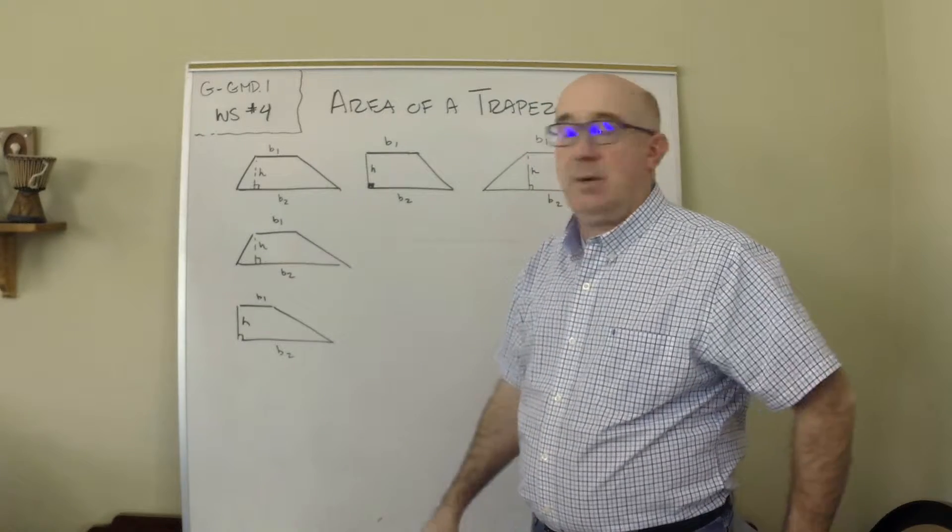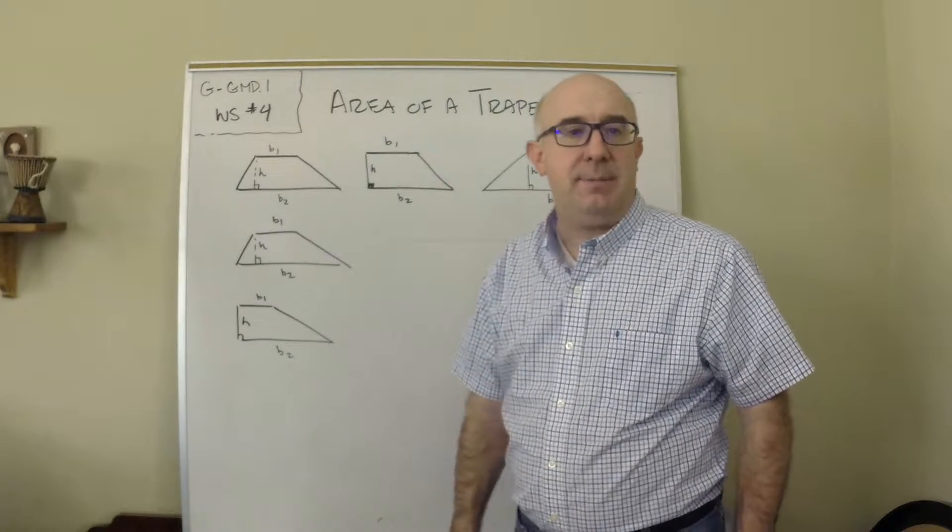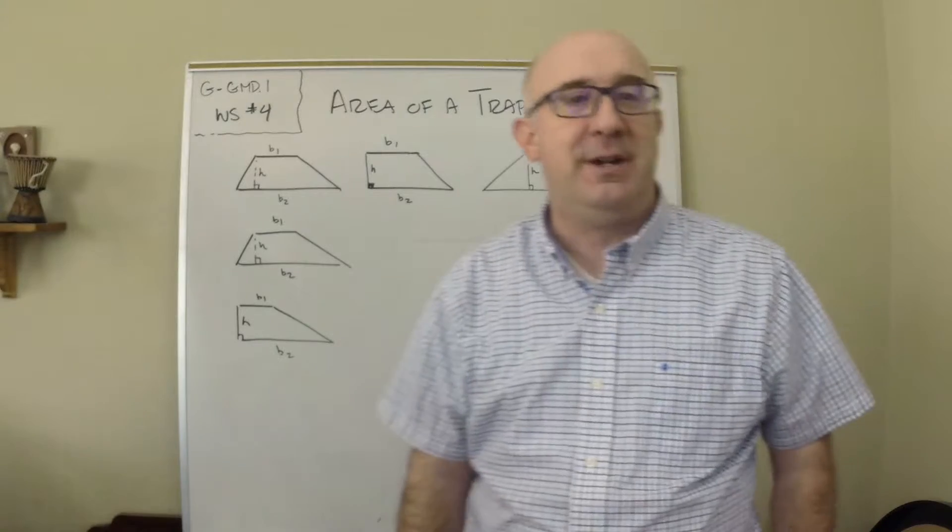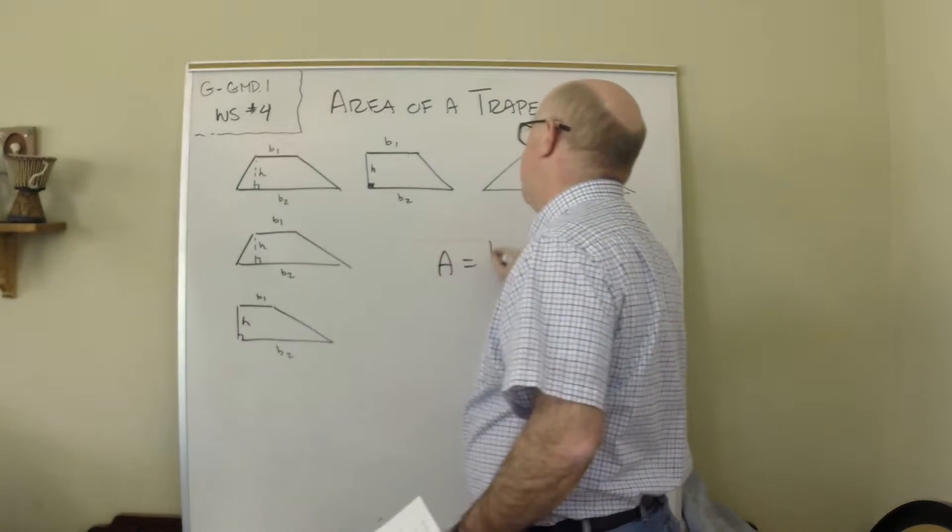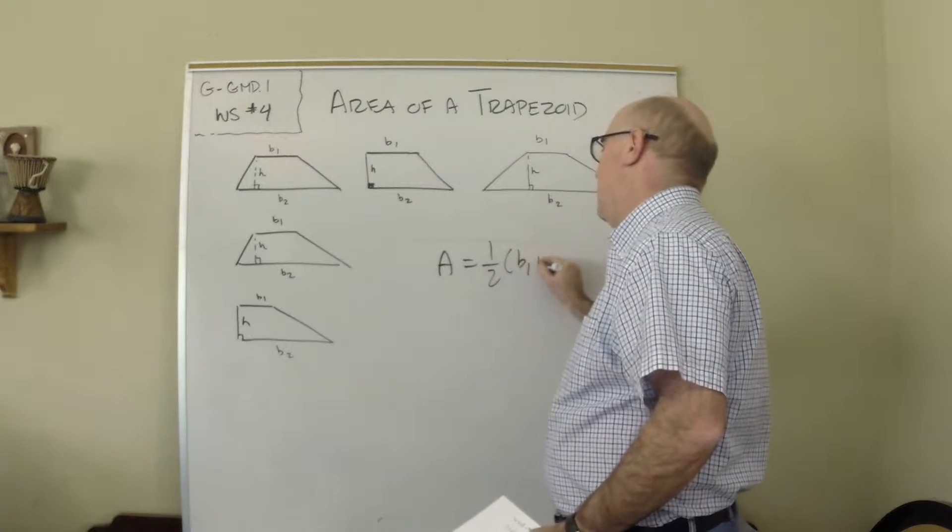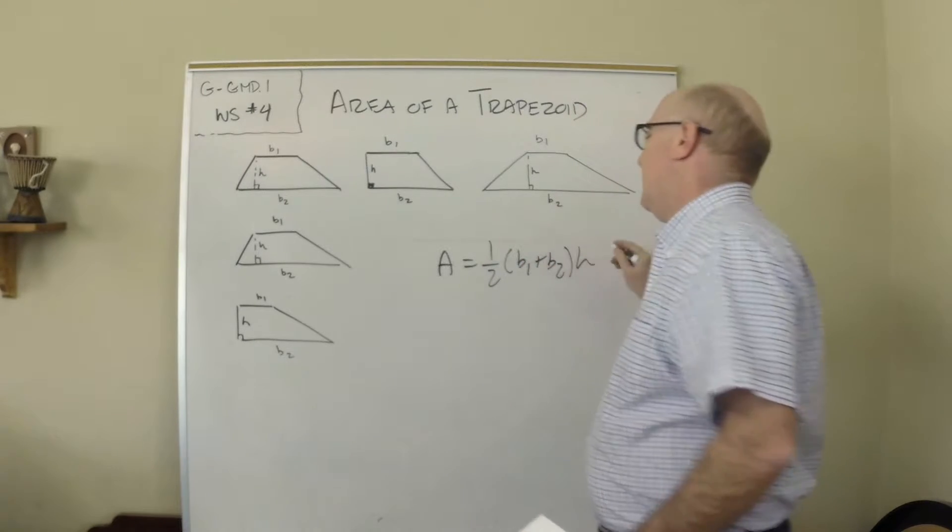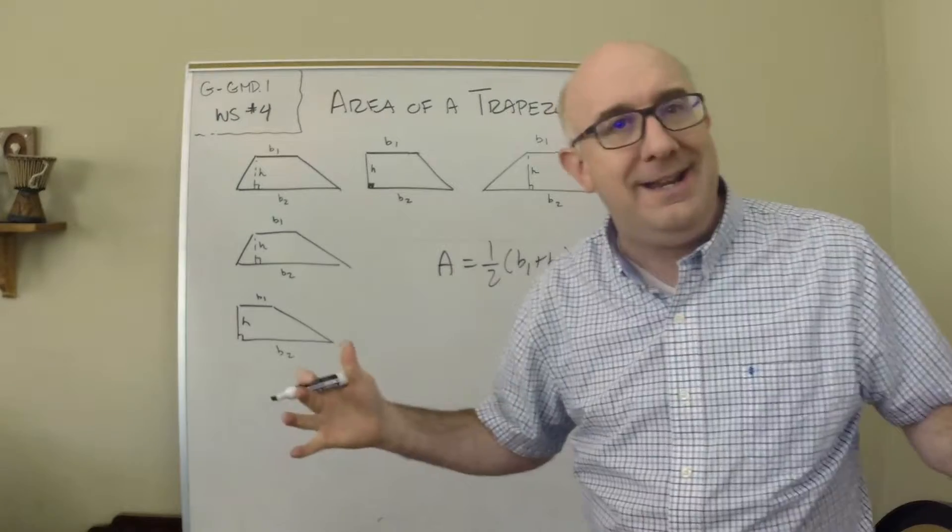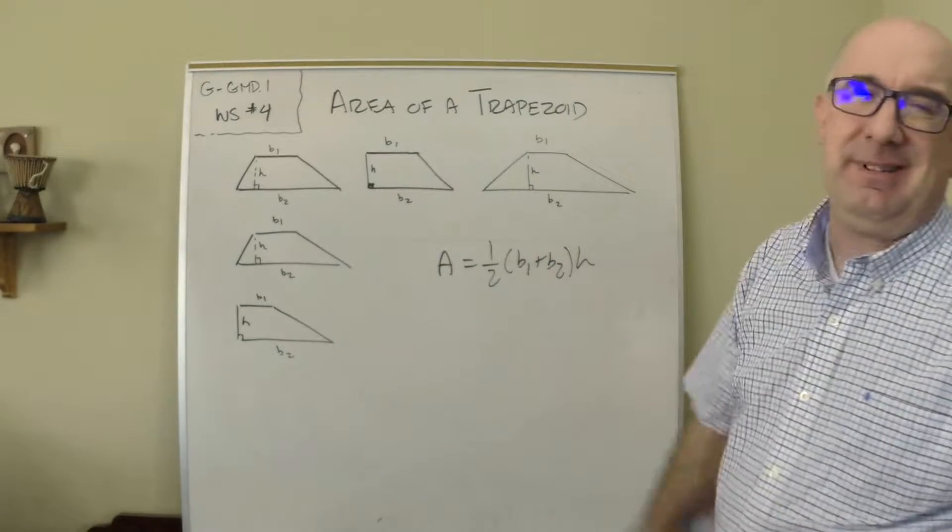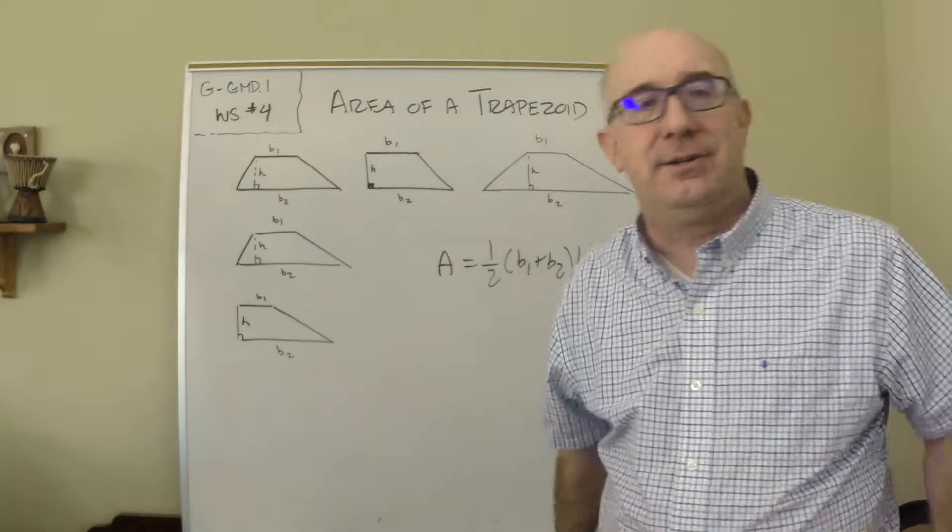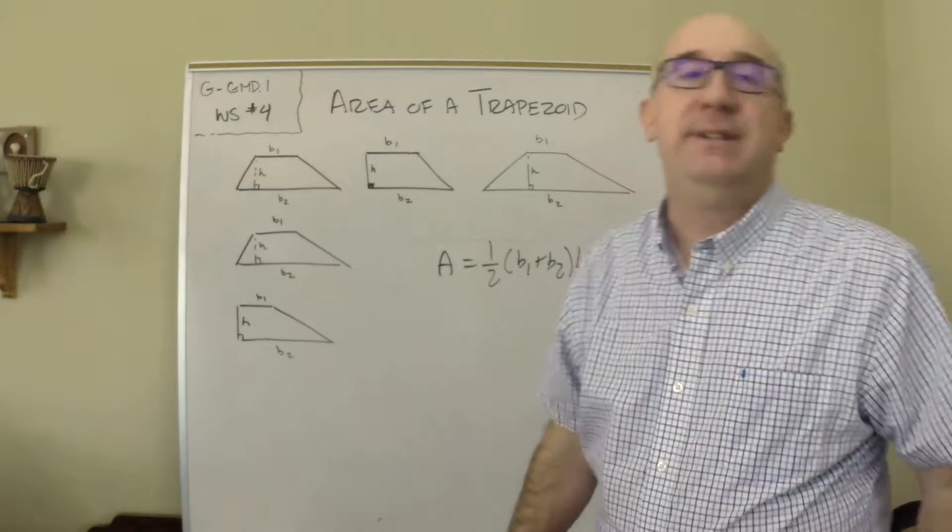Okay, let's take a look at worksheet four of this series. This is about the area of a trapezoid. Now the area of a trapezoid is a fascinating thing because its formula is so unique and different. When we look at this we're like, what is that? Where did it come from? Triangles, squares, rectangles - boring stuff.